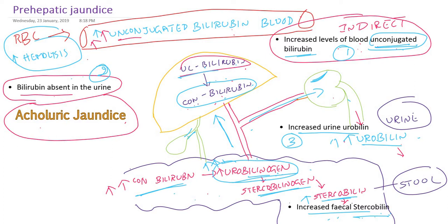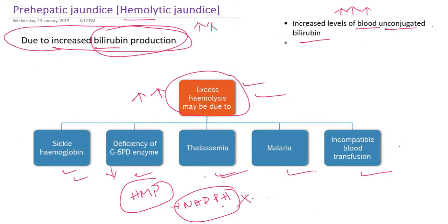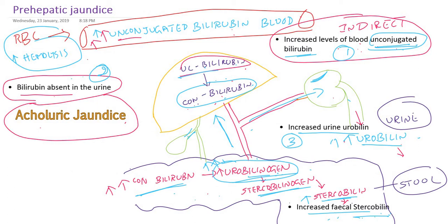In summary, prehepatic jaundice is also called hemolytic jaundice because of the death or rupture of RBCs. There is excess production of unconjugated bilirubin; the liver conjugates some of it but unconjugated bilirubin still accumulates in the blood. There is more urobilinogen in the urine and more stercobilin in the stool, but absence of bilirubin in the urine — hence it is also called acholeric jaundice. In the next presentation, we will study hepatic jaundice and obstructive jaundice.